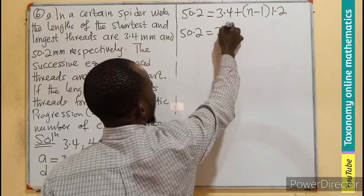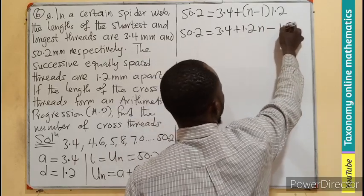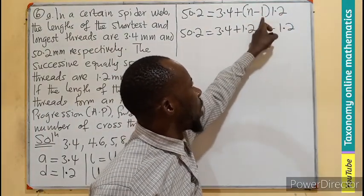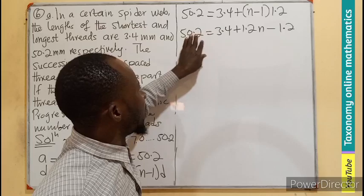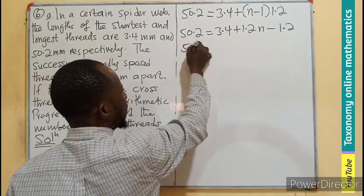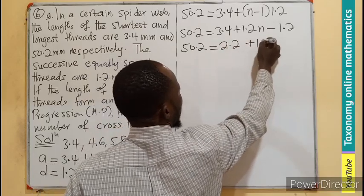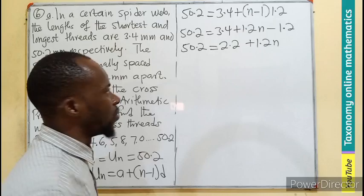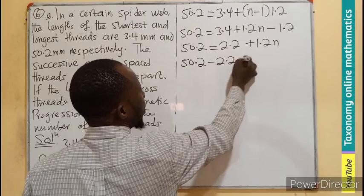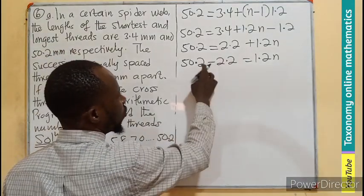50.2 equals 3.4 plus 1.2n minus 1.2. If you expand, the n will multiply 1.2, 1 will also multiply 1.2. We can group the constants together. So I can have 50.2 equals 2.2 plus 1.2n. We can now do our subtraction.